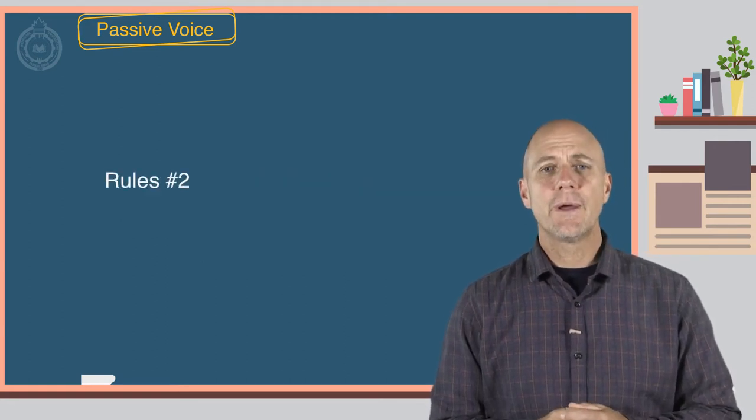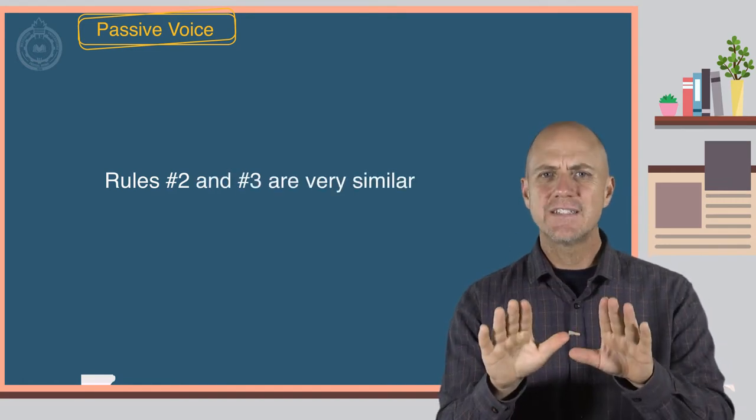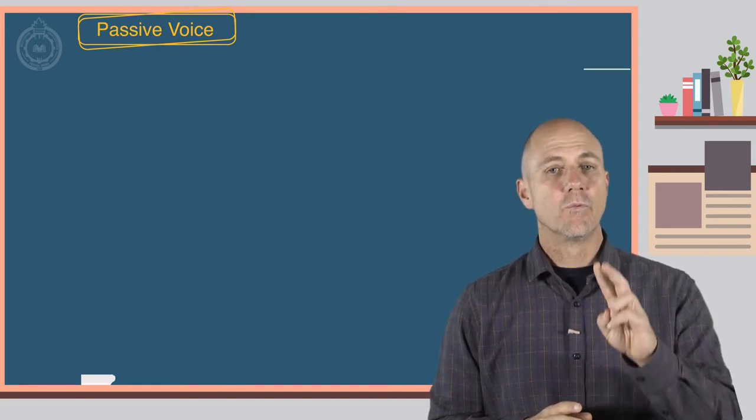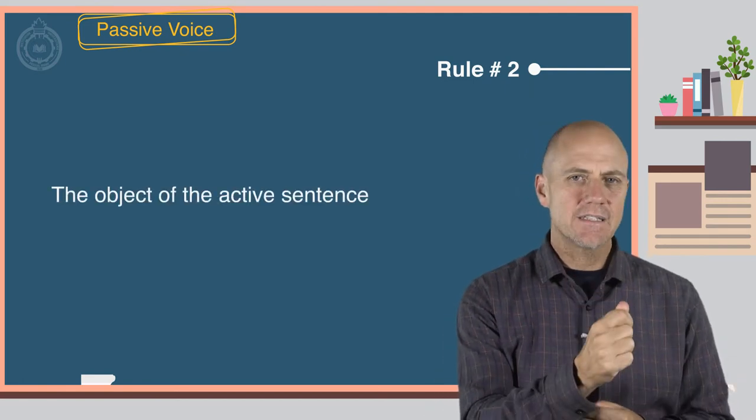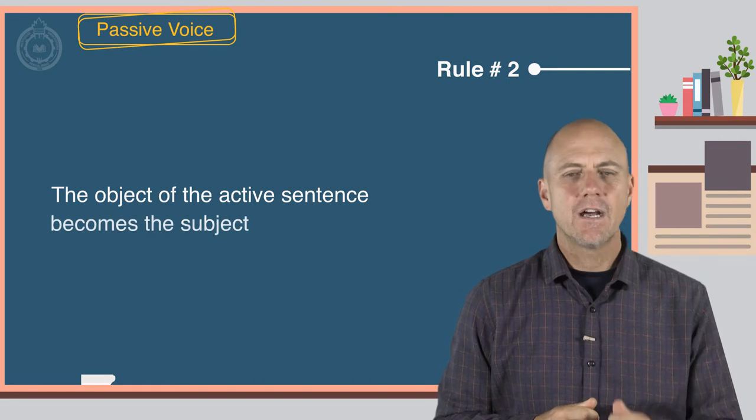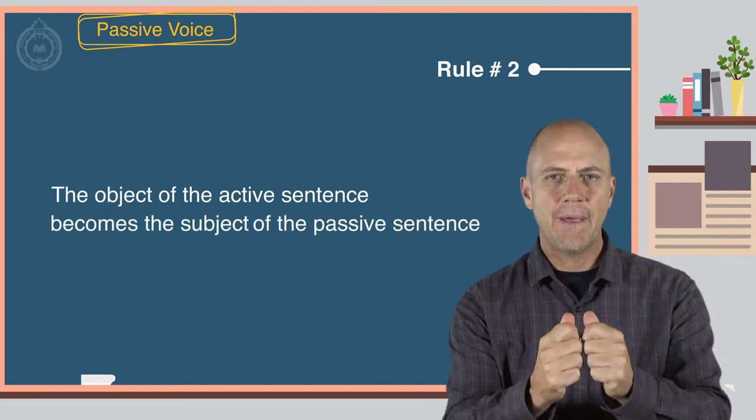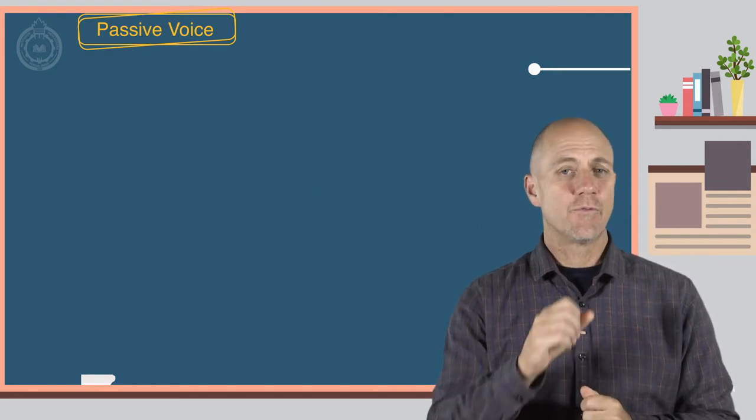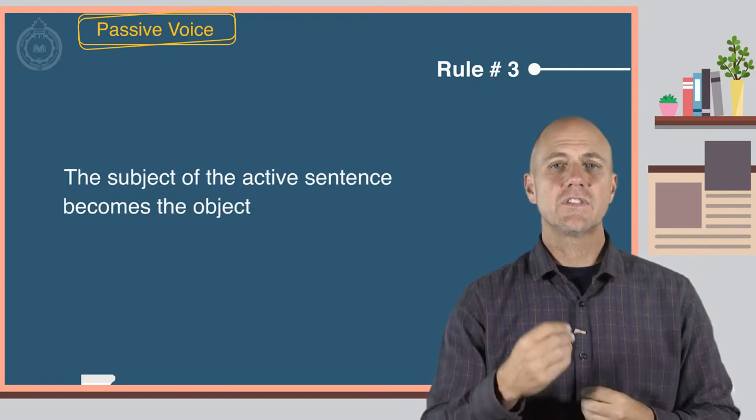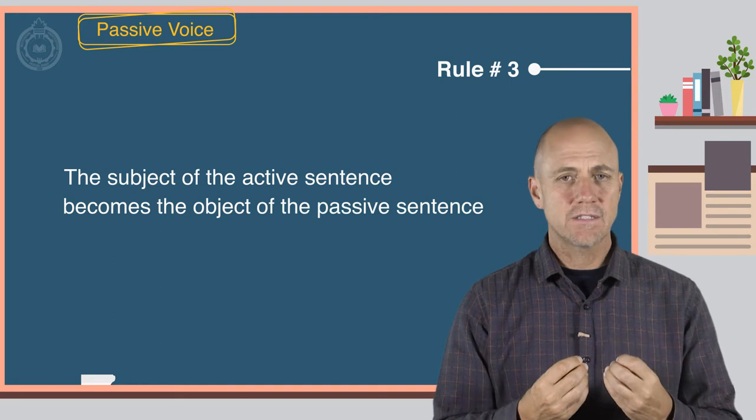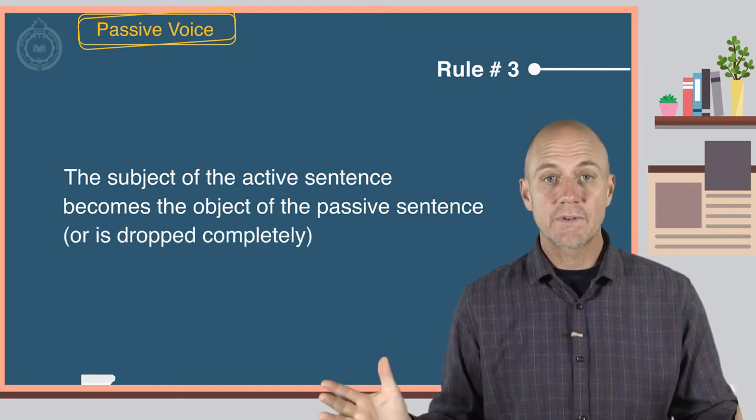Rules number two and three are very similar. Rule number two. The object of the active sentence becomes the subject of the passive sentence. And rule number three. The subject of the active sentence becomes the object of the passive sentence, or is dropped completely.